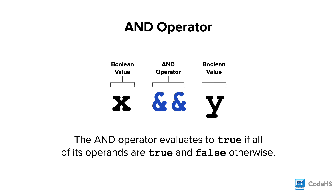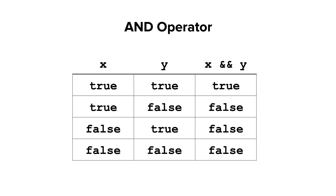The and operator evaluates to true if both of its operands are true, and false otherwise. It is denoted as two ampersands with no spaces and requires two Boolean values as operands. One way to view Boolean expressions is what we call a truth table. Truth tables show all the possible values for our Boolean variables and the resulting value of the expression. Notice how the only way the expression evaluates to true is when both Boolean values are true. If either x or y is false, the expression is false.